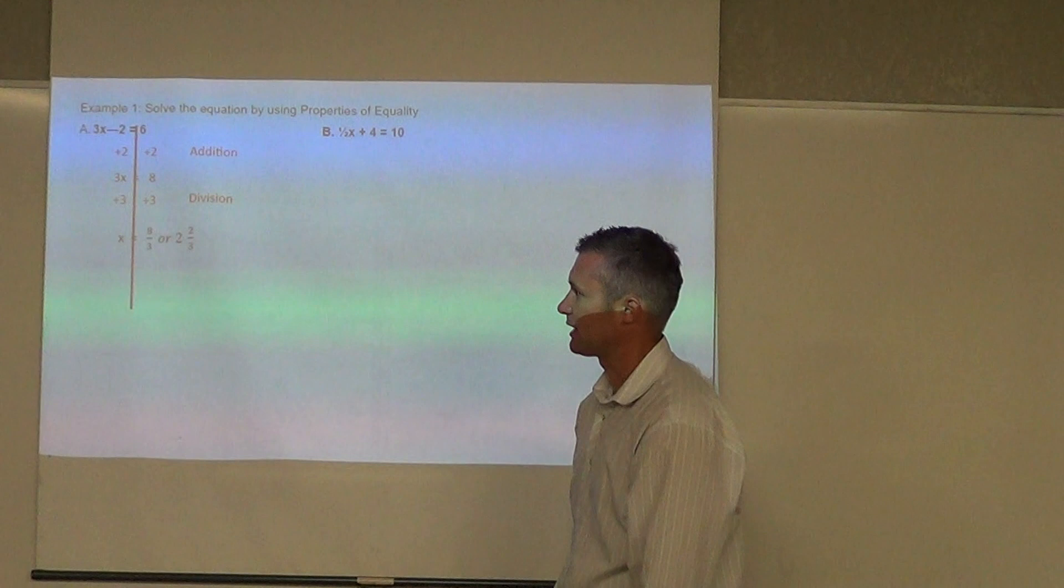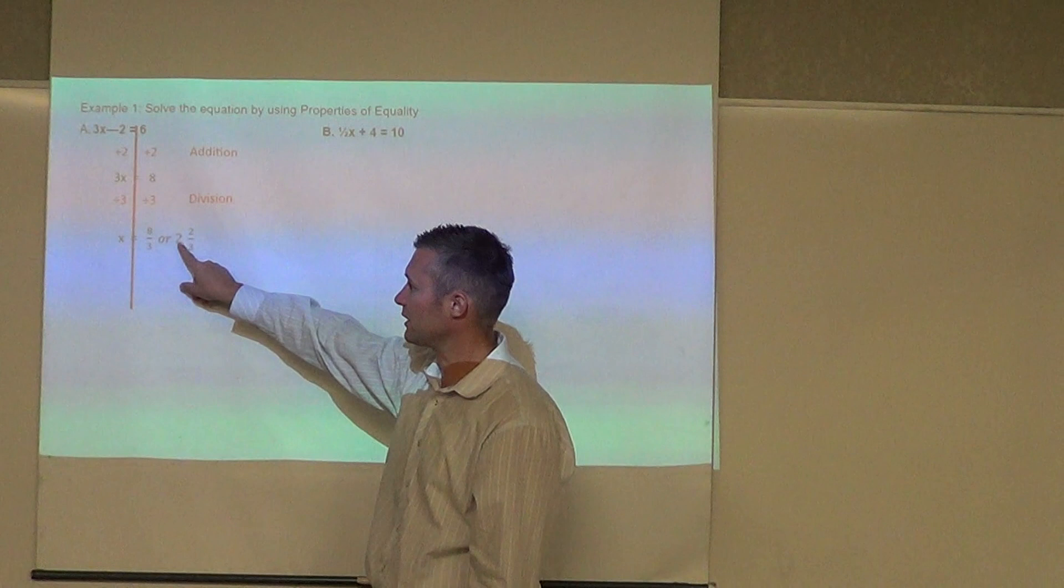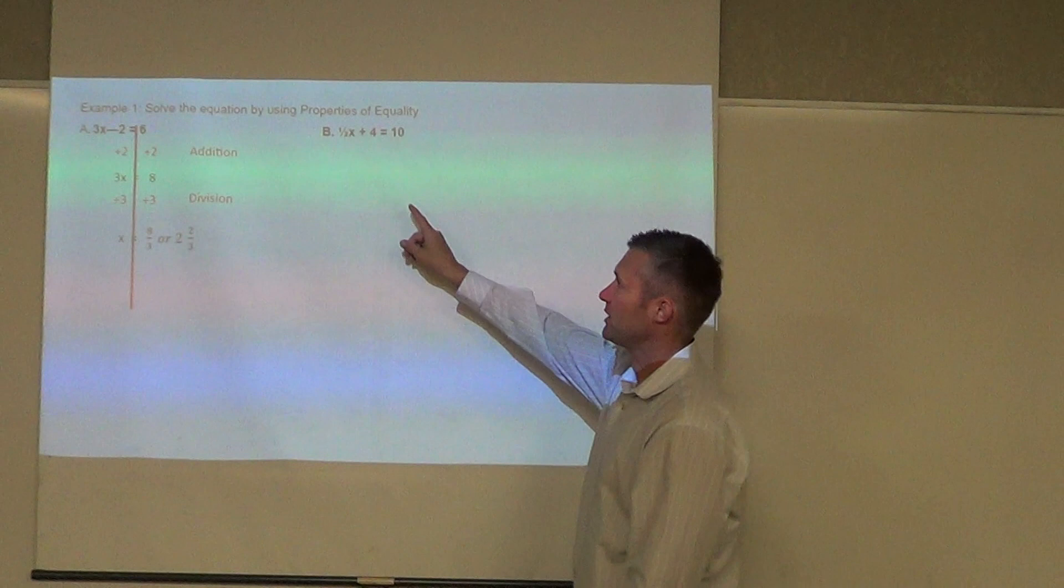Then I go ahead and say, now I need to get rid of this three. It's multiplying by three, so I divide by three. And we could just leave it as eight over three, so eight-thirds, or you could say two and two-thirds, or you could write it as a decimal, 2.67.